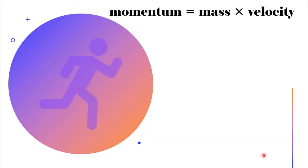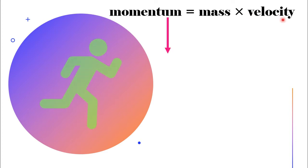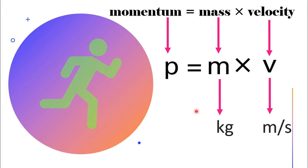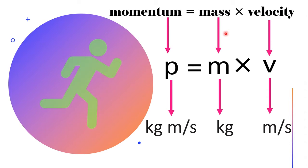To change its direction, we have to give a higher force in another direction. Now let's see the equation of momentum. The equation is: momentum equals mass multiplied by velocity. The standard unit of mass is kilogram and the standard unit of velocity is meter per second, or ms⁻¹. So the unit of momentum is kilogram meter per second. Momentum is a vector quantity.